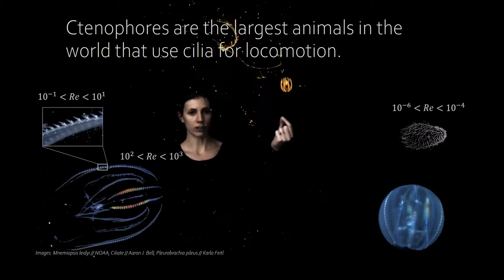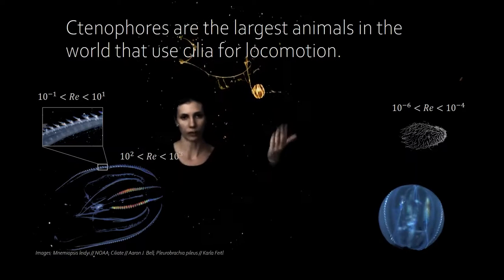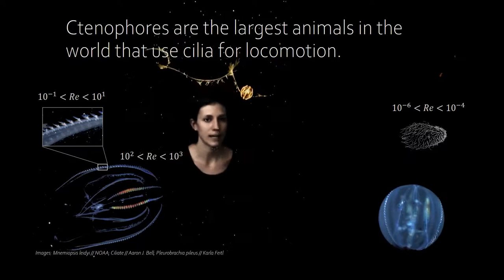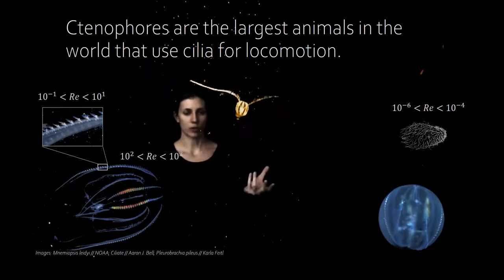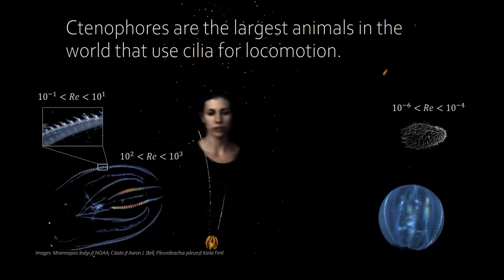So here's a cydipid ctenophore, which is an ambush predator. It's got a long sticky tentacle spread out, it's drifting along with the flow until it catches a piece of prey, and then it has no problem transitioning into a more active swimming mode where it can move quite quickly and turn very sharply.